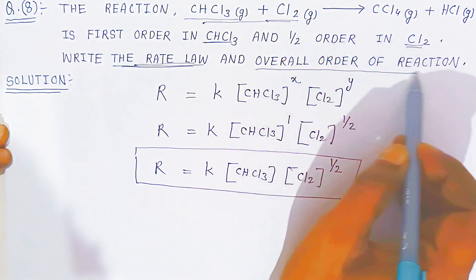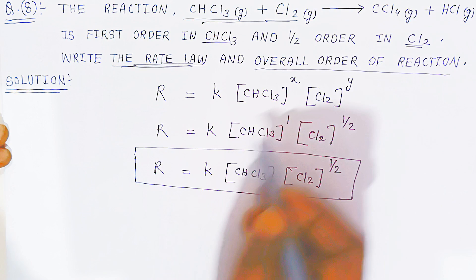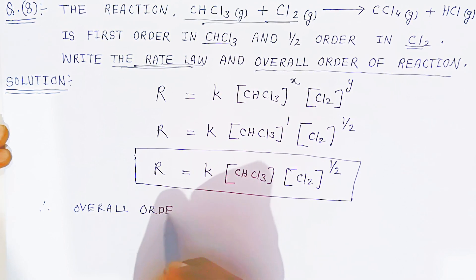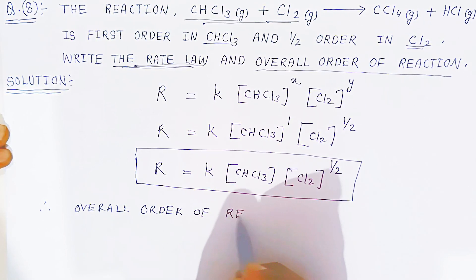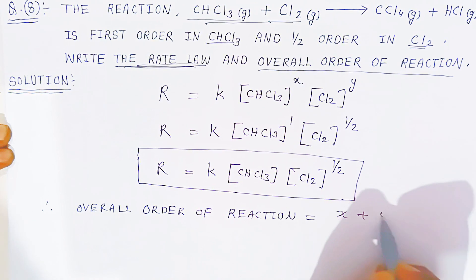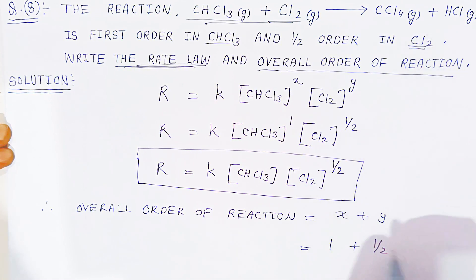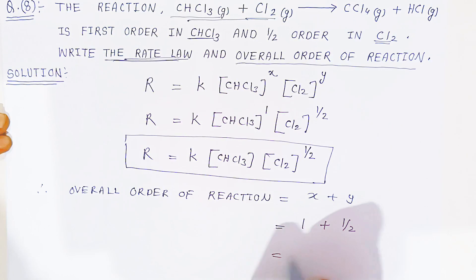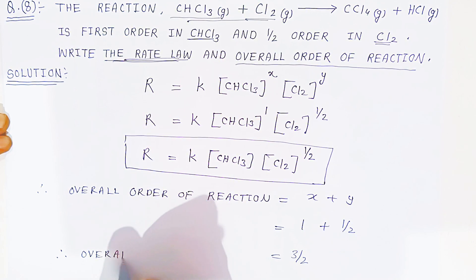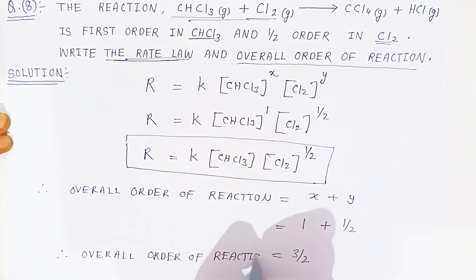Now, the second part: you have to find the overall order of the reaction. The overall order of the reaction is found by adding the individual orders: X plus Y. Here we have first order in chloroform, that is 1, and half order in chlorine gas, that is 1/2. When you add them: 1 + 1/2 = 3/2. Therefore, the overall order of the reaction is 3/2.